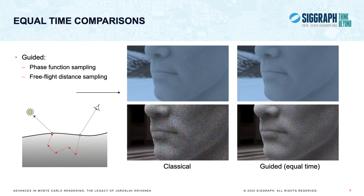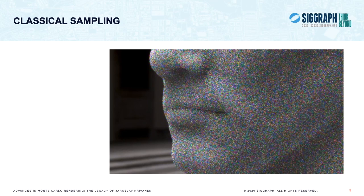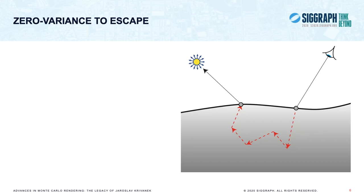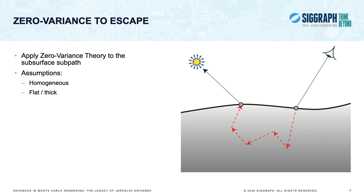Applying the classical sampling algorithm to grey translucent material under general illumination, we see variance in pixel values for two reasons: one comes from non-uniform lighting at the surface, and the second from absorption within the medium. It is possible to do zero variance guiding that considers both properties simultaneously — Jiří will talk about that in the next section. But right now we focus only on reducing variance due to subsurface absorption. We ignore the lighting at the surface and apply zero variance theory only to the subsurface subpath, under assumptions that the material is homogeneous, optically flat, and thick. We combine the guided estimator with the classical one via multiple importance sampling to handle cases when these assumptions don't hold perfectly.